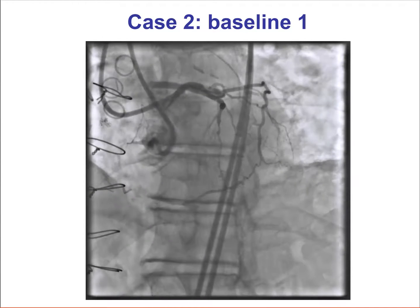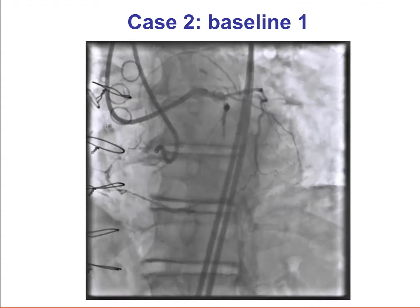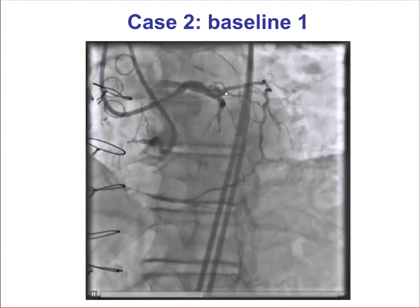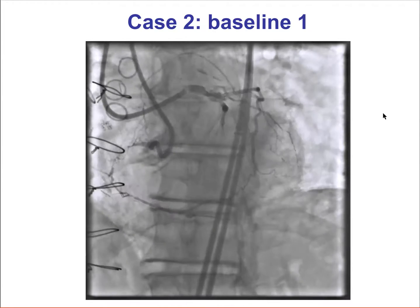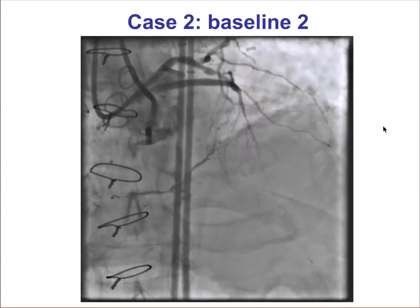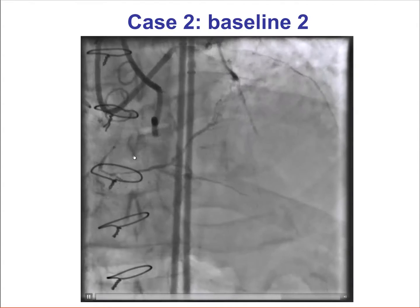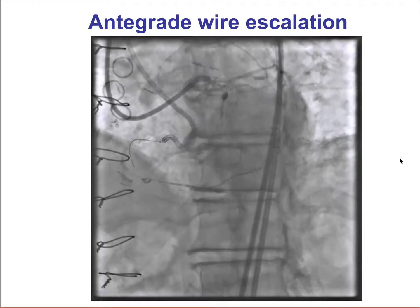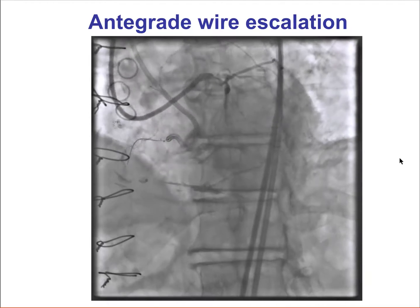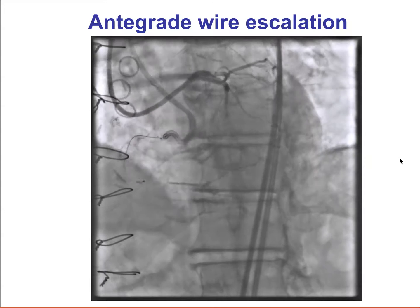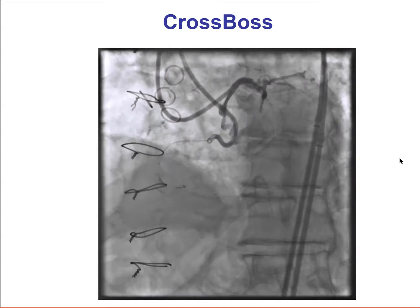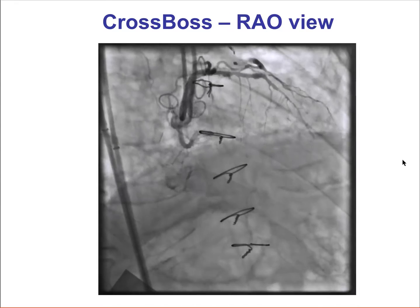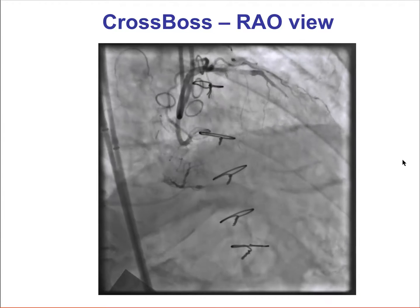Moving to the next case — also a dissection reentry case in a proximal right coronary artery. The vessel is engaged with an AL1 guide and the contralateral vessel with an XP 3.5 guide. This is an LAO cranial projection showing a short occlusion but with a very tortuous right coronary artery. Initial attempts with wire escalation did not succeed in crossing. The guidewire can be seen in an acute marginal branch or in the pericardium. We then attempted to cross with the CrossBoss, which appeared favorable in one view, but in an orthogonal view appeared to be in a side branch.